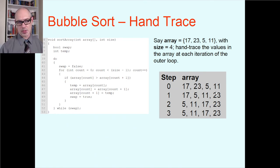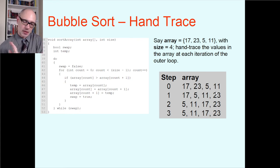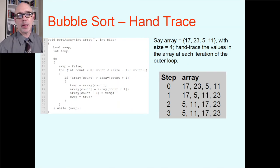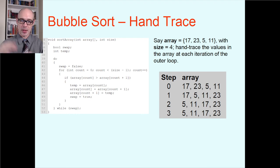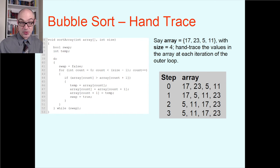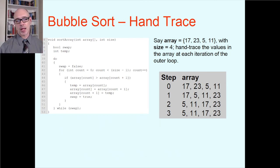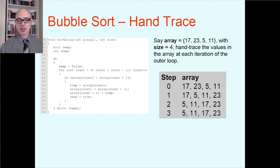Big stuff flies to the end really fast; little stuff takes one step at a time. That's why this algorithm is called bubble sort — that action of small things coming to the top of the array is like bubbles in a beverage slowly percolating up to the top of the glass, and that effect is where people started calling this bubble sort.